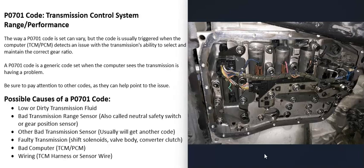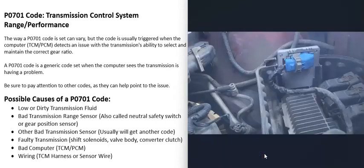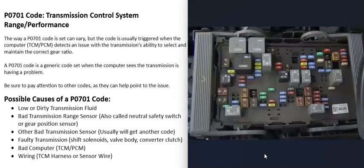The next possible cause is a bad computer — a bad transmission control module (TCM) or powertrain control module (PCM). This isn't too common but it does happen. If you think you have a computer problem, make sure your battery is good and check that the alternator is charging correctly, because these computers need a good stable power supply and a good ground, otherwise they can do weird things. It's also a good idea to check for any computer-related blown fuses, as a blown fuse will cause problems and typically trigger a lot of codes.